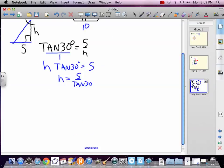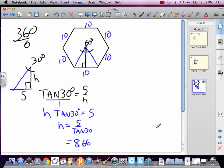Which is 5 divided by tan 30: 8.66. Awesome, wonderful, we just found that.